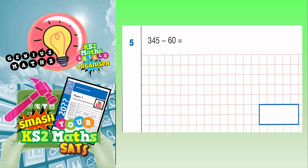Question 5: 345 subtract 60. First of all, make sure you double check that it is subtract, because there are so many people that lose marks every year in the SAT because they accidentally add them together when they should be subtracting, or the other way around—accidentally subtract when they should be adding.